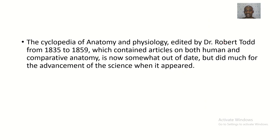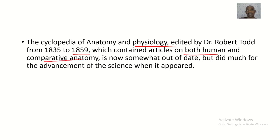The Cyclopedia of Anatomy and Physiology was edited by Robert Todd from 1835 to 1859. It contains articles on both human and comparative anatomy — comparative anatomy being the comparison of the human system to that of animal systems.